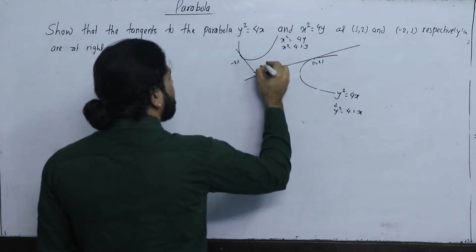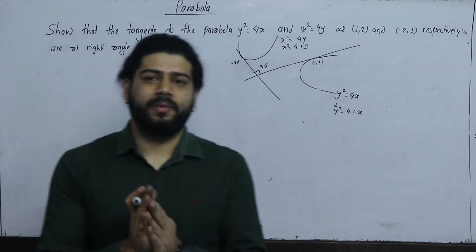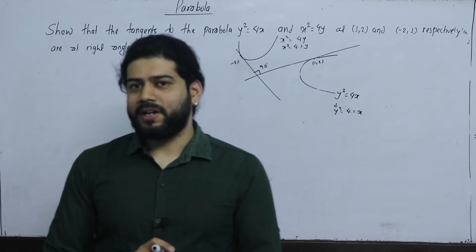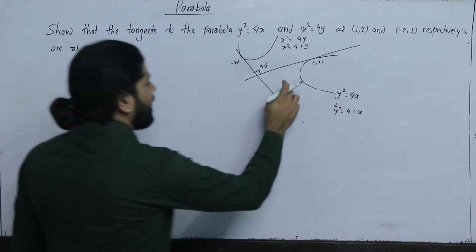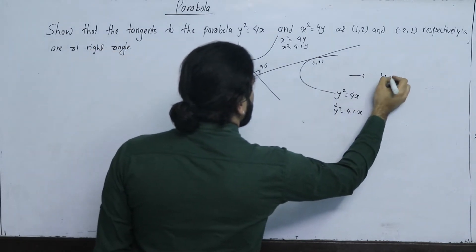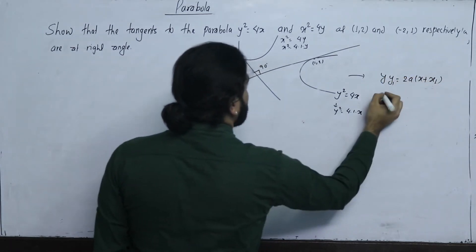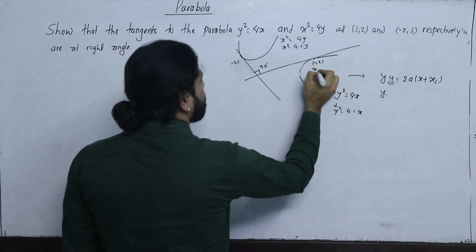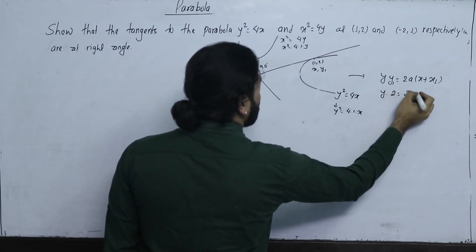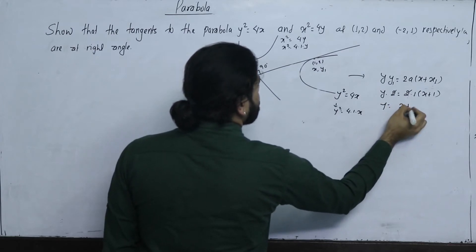The tangent angle theta is 90 degrees, so the slopes satisfy m1 × m2 = -1, meaning they are perpendicular. The tangent equation is y·y1 = 2a(x + x1). Substituting x1=1, y1=2, and 2a=2, we get y = x + 1.